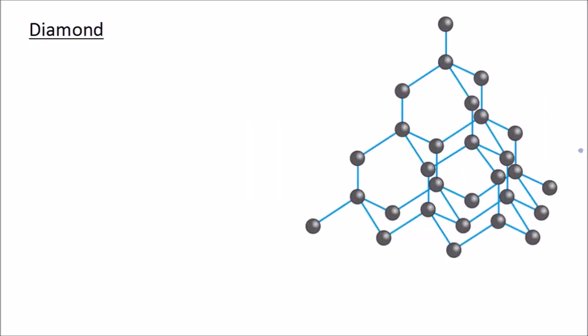First of all we'll start with diamond. In diamond each carbon atom forms four covalent bonds with other carbon atoms. So if we take this one here, for example, we can see that it forms one, two, three, four covalent bonds with other carbon atoms.